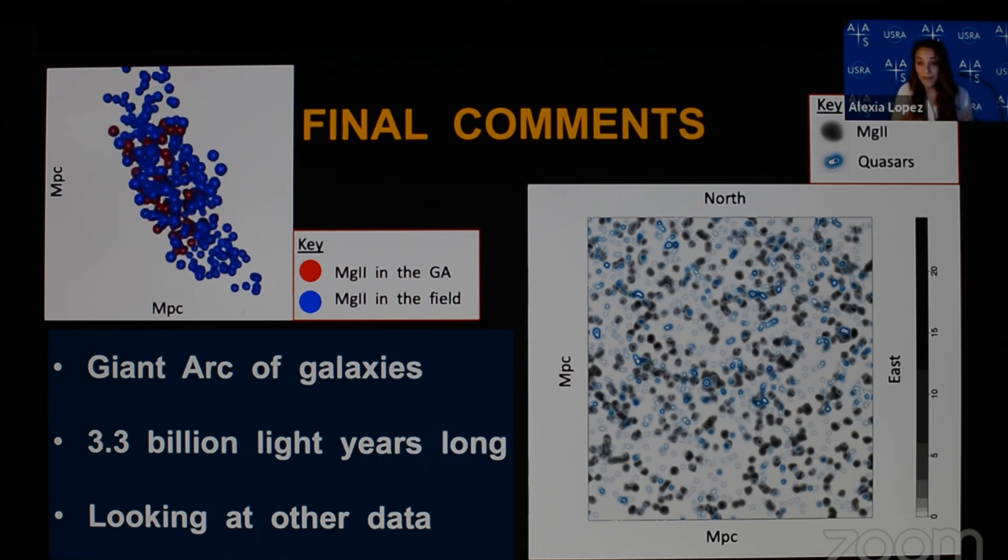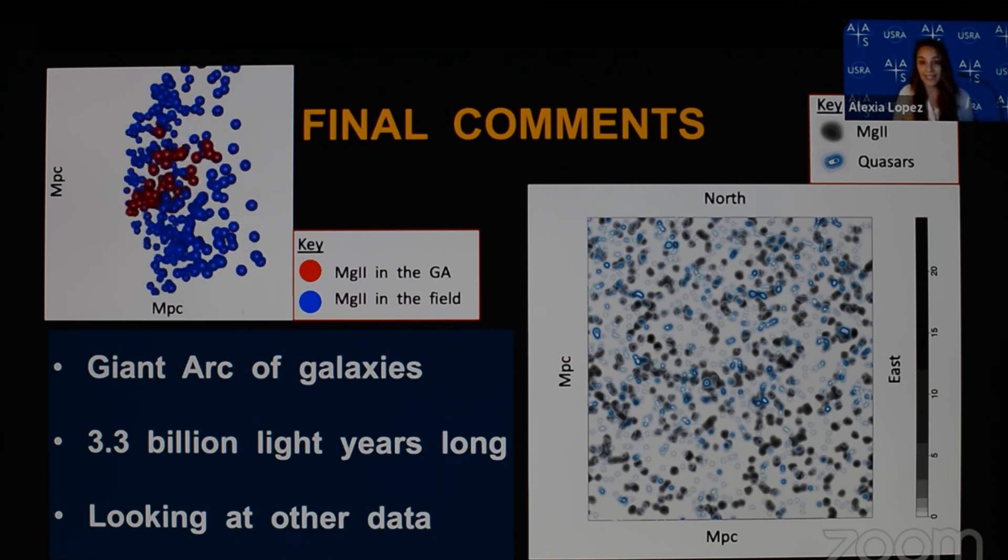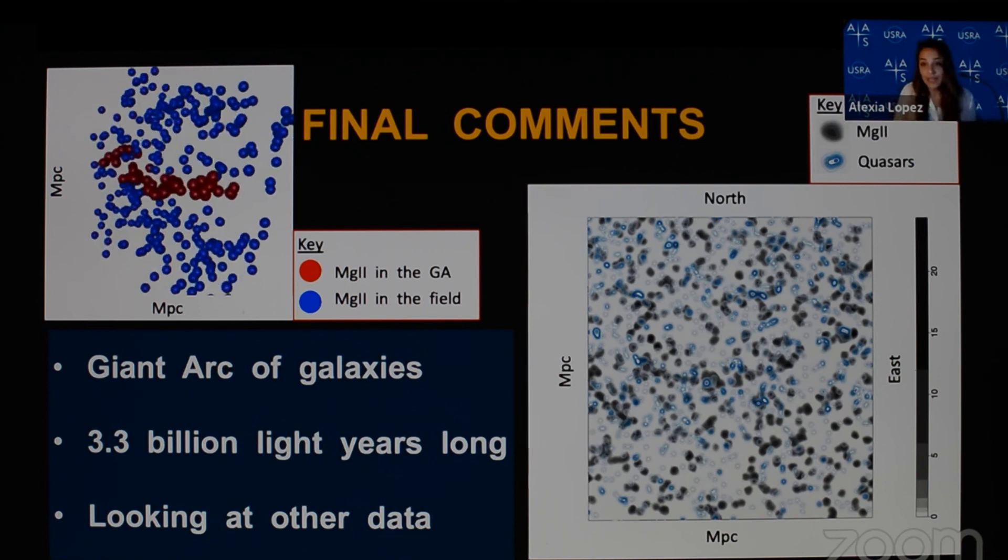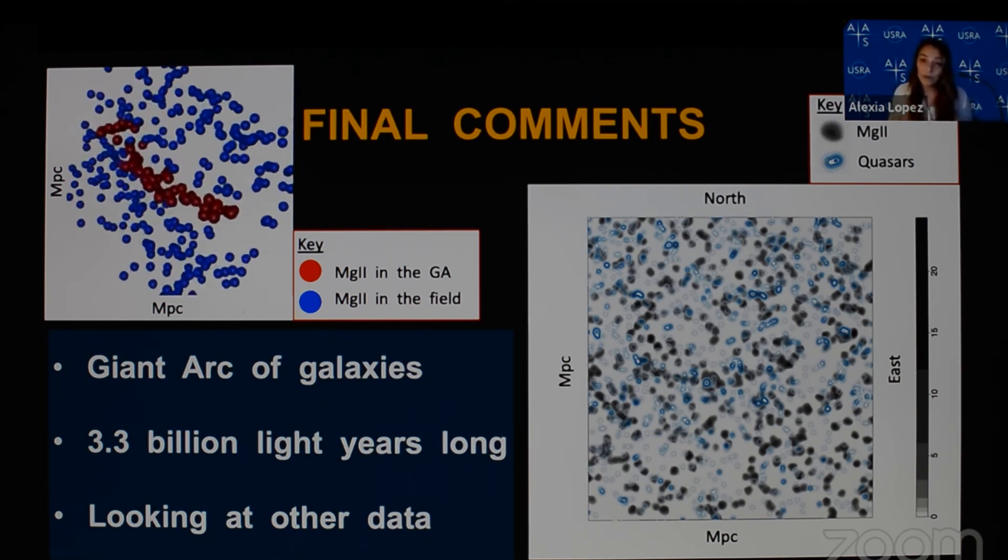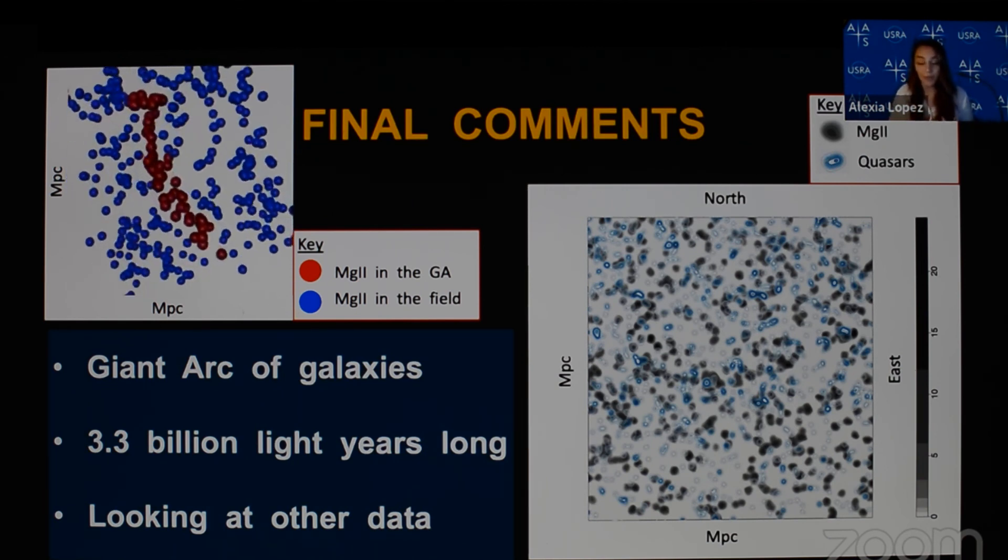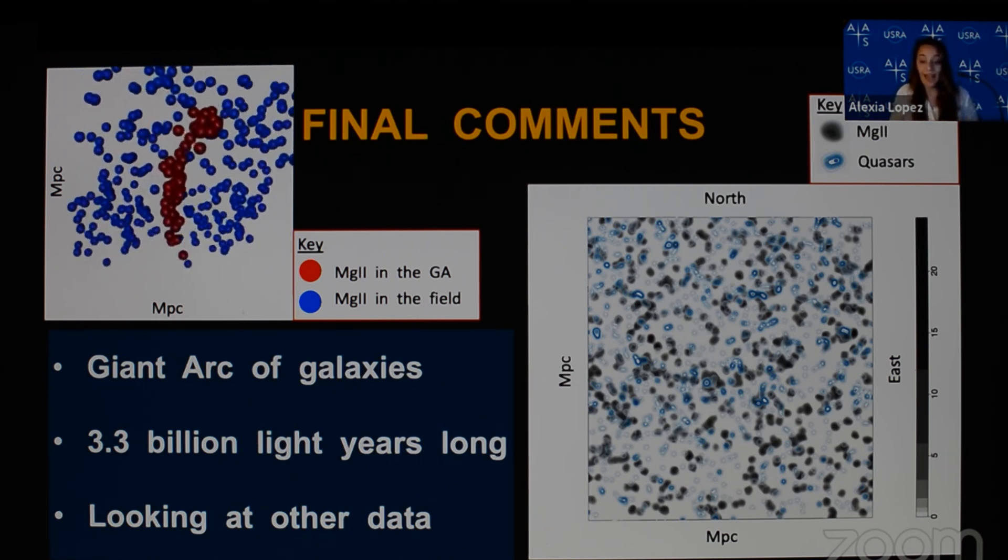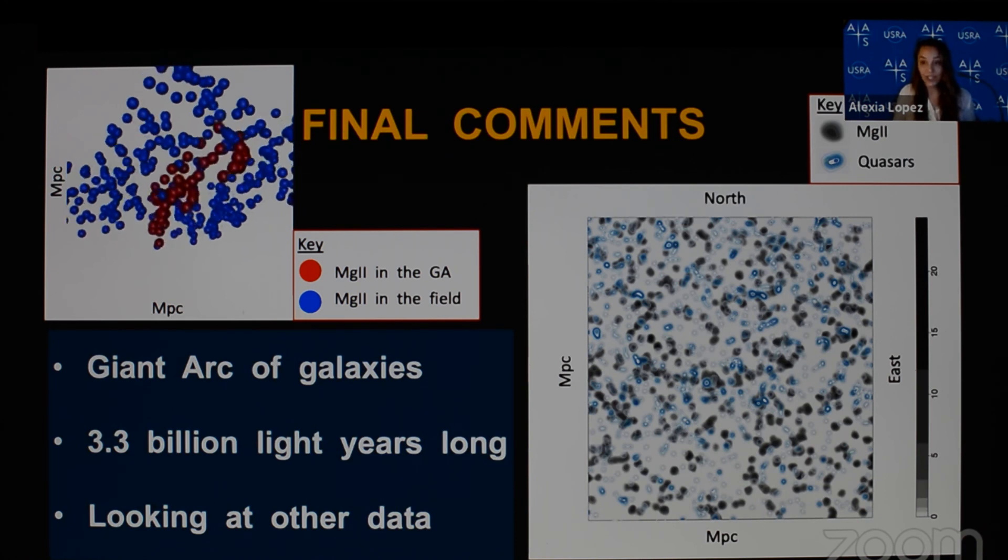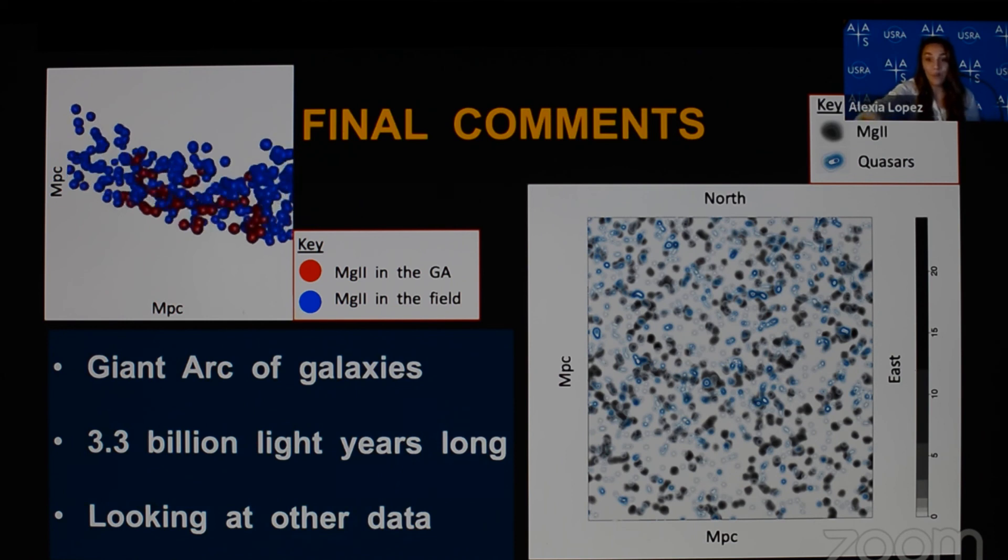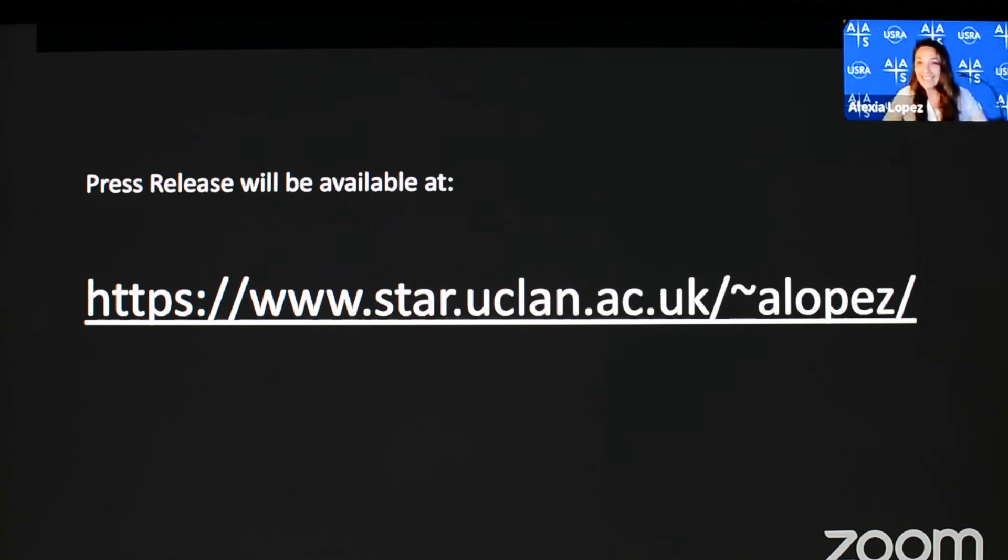So, to summarize, we have found a giant arc of magnesium-2 absorbers corresponding to a large-scale structure of galaxies. The giant arc spans 3.3 billion light-years, which is almost three times the theoretical threshold, and is also among several other large-scale structures, indicating a potential challenge to the standard model. Statistical tests show that the giant arc is indeed significant, and a quick look at other data suggests an association between the quasars and the magnesium-2 absorbers. And the press release will be available at this link later today. Thank you.